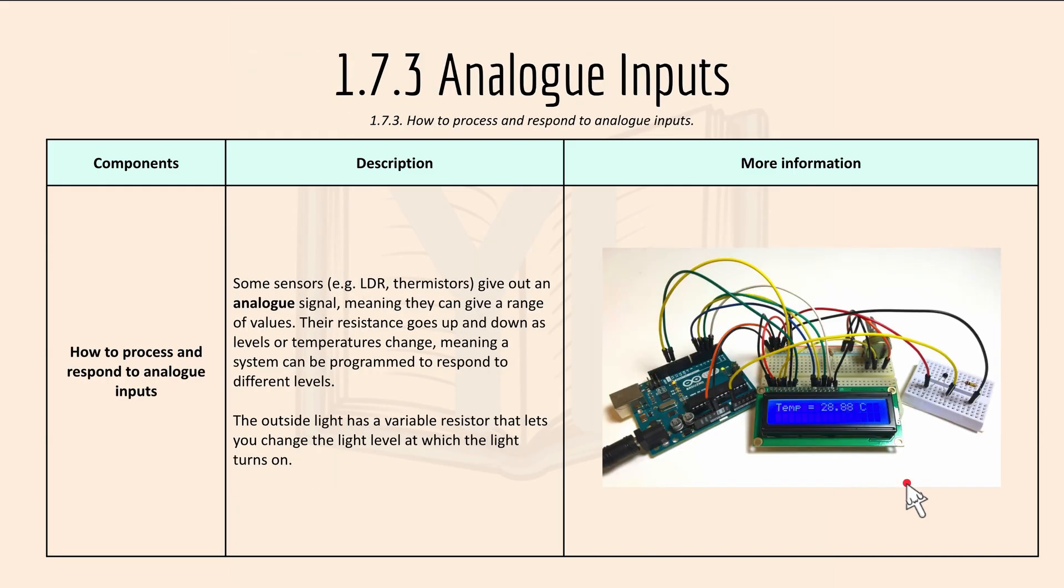Then we have 1.7.3 how to read and respond to analog inputs. And here's the description: Some sensors like LDR or light dependent resistor or thermistor, they give out an analog signal, meaning they can give a range of values.